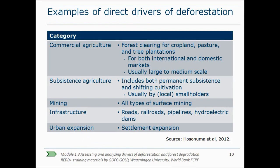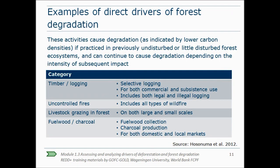This slide shows some examples of different direct drivers of deforestation: commercial and subsistence agriculture, mining, infrastructure and urban expansion. Some examples of activities causing forest degradation are timber and logging activities, fires, livestock grazing in forests, the collection of fuel wood and the production of charcoal. This categorization of drivers is based on a paper by Hosunuma and co-authors, published in 2012, though other categorizations are possible as well.